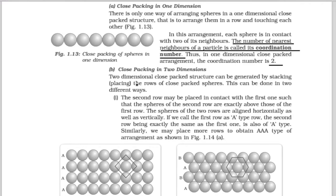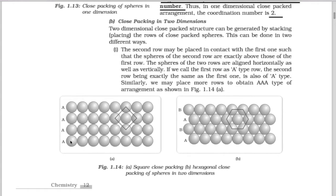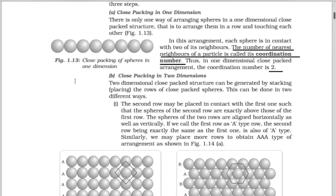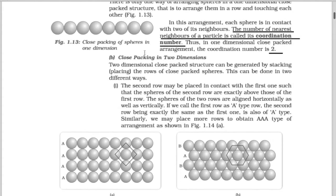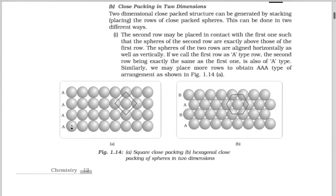The next step is closed packing in two dimensions. In two dimensional closed packing, the packing can be done in two different ways. In the first way, the first row will be arranged just as we discussed in one dimensional closed packing. The arrangement of the second row may be different. The second row may be placed in contact with the first one such that the spheres of the second row are exactly above those of the first row. The spheres of the two rows are aligned horizontally as well as vertically.